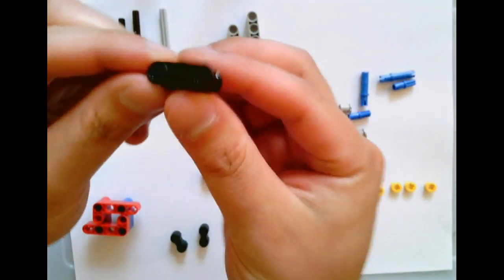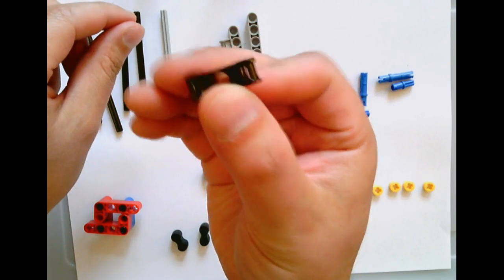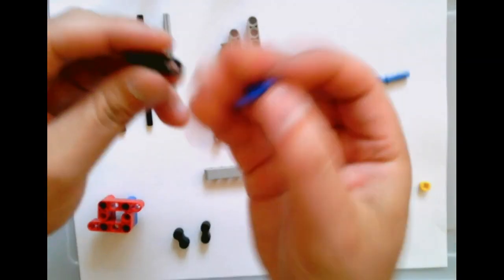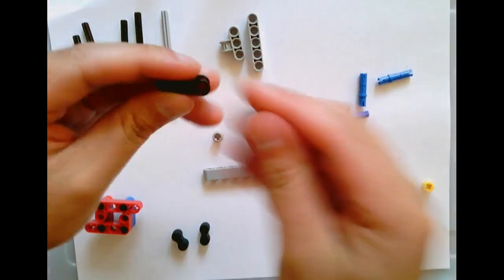Your next step is going to be to get one of these pieces. It's got axle holes like that and a hole through it. You're going to take one of these blue pieces and put that through here.